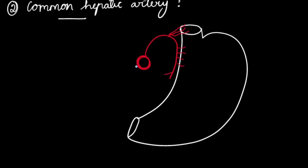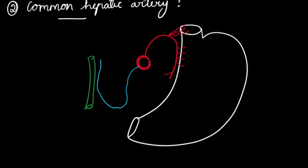The common hepatic artery arises downwards and to the right, extending up to the upper border of the duodenum where it gives its branches. It runs along the free margin of the lesser omentum along with the portal vein and bile duct. From here it further divides into the right and left hepatic arteries, which enter into the porta hepatis.